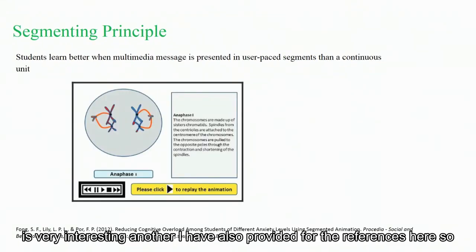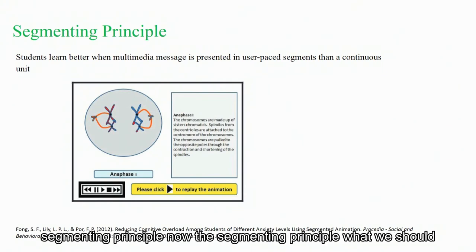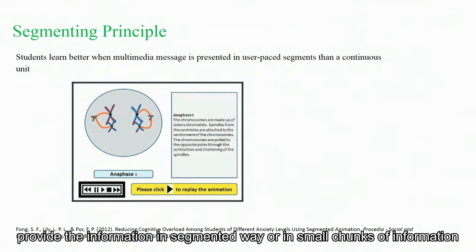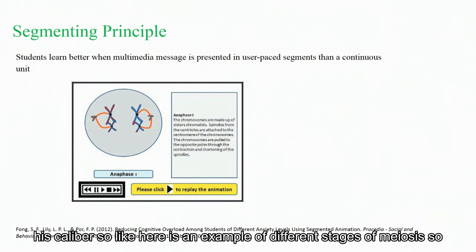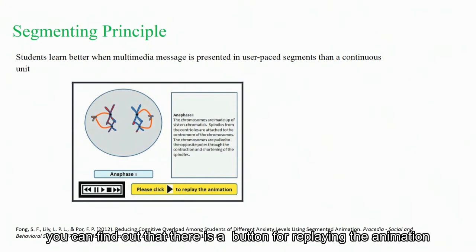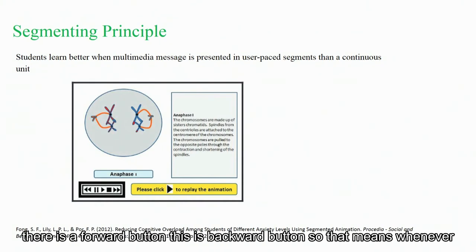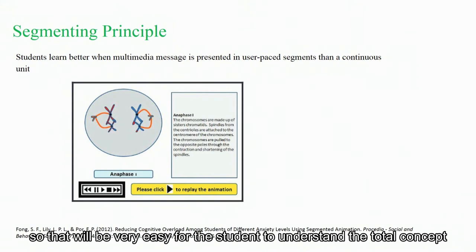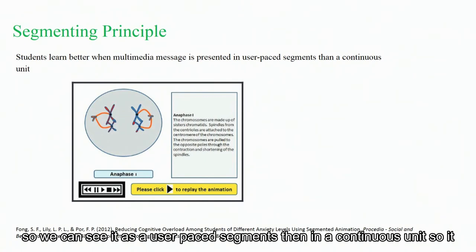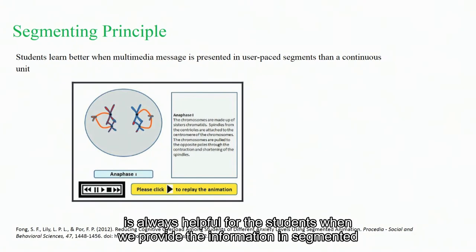Next is the segmenting principle. I have also provided references here. In the segmenting principle, we should provide information in a segmented way or in small chunks, so that the user can access the information as per their choice or caliber. For example, here is an example of the different stages of meiosis. You can find a button for replaying the animation, a forward button, and a backward button. Whenever a student is facing some kind of problem, they can go back and see the information. We can call it a user-paced segment rather than a continuous unit. It is always helpful for students when we provide information in segmented form.